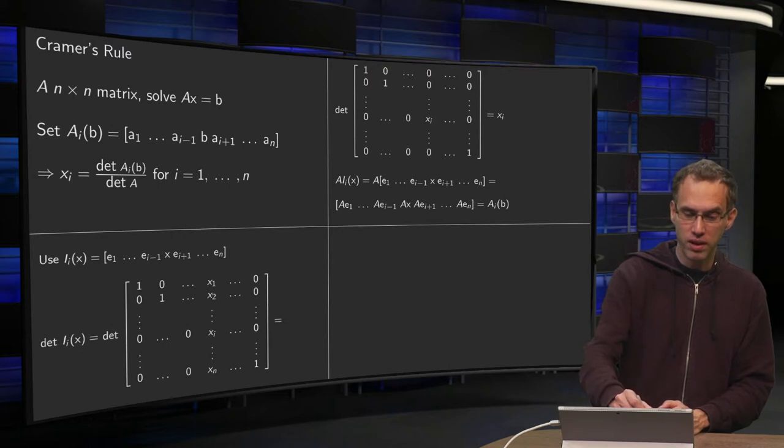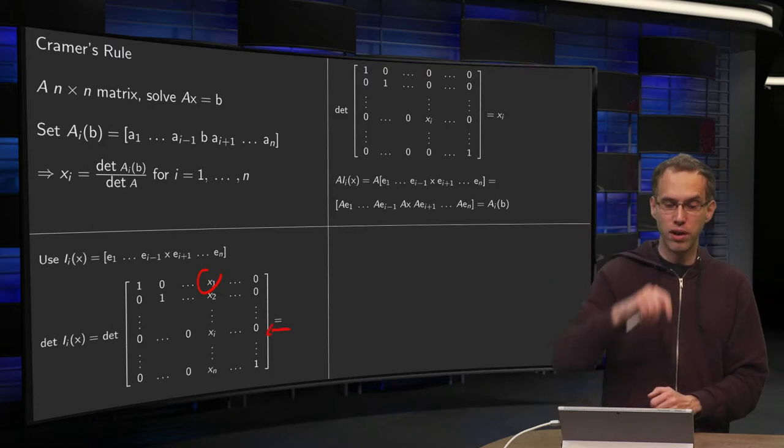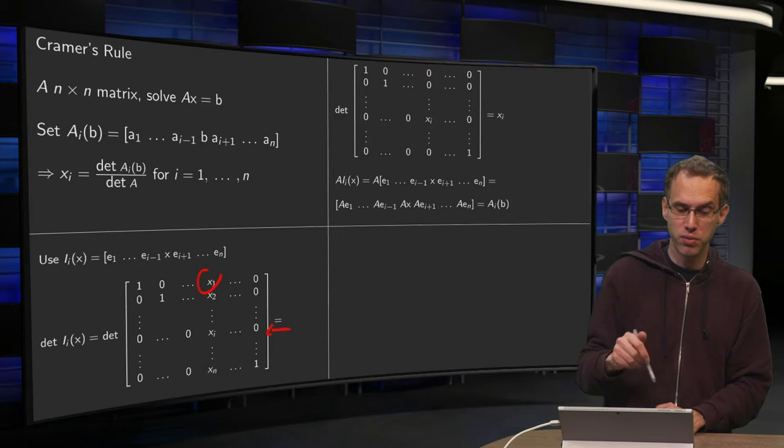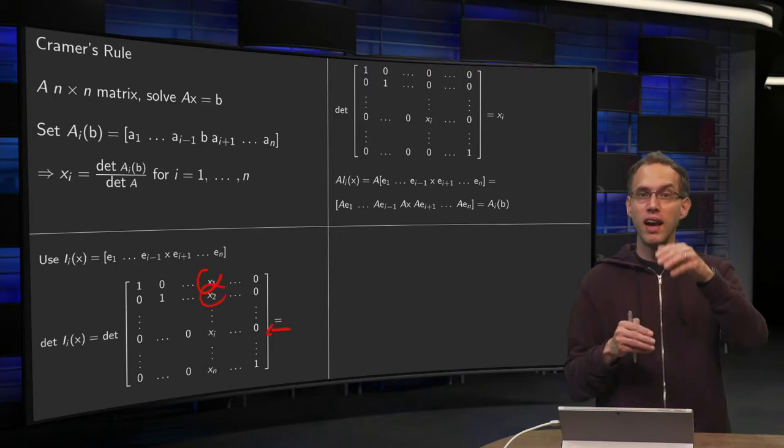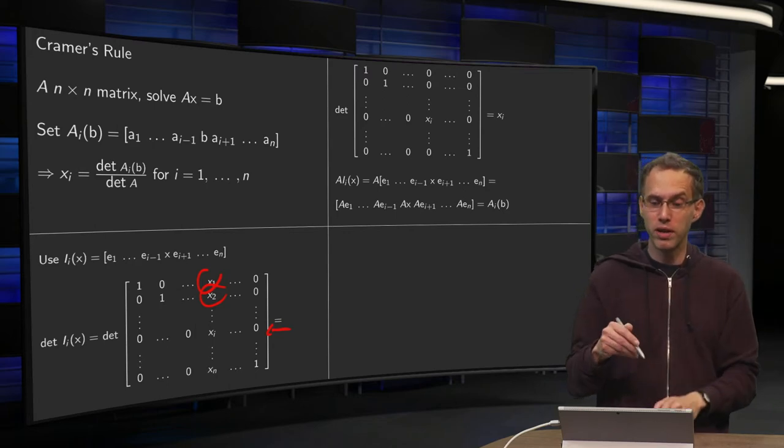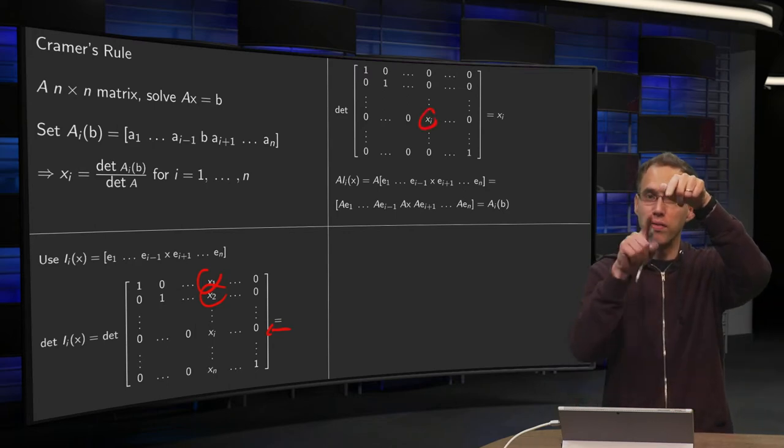And using row reduction, we can get rid of the x_1 by using this ith row. You can get the form of zero instead of the x_1. You can get rid of the x_2, and so on and so forth. You can eliminate all variables in the column, and you're only left with x_i and zeros above and below it.